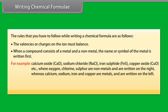When a compound consists of a metal and a non-metal, the name or symbol of the metal is written first. For example, calcium oxide, CaO, sodium chloride, NaCl,